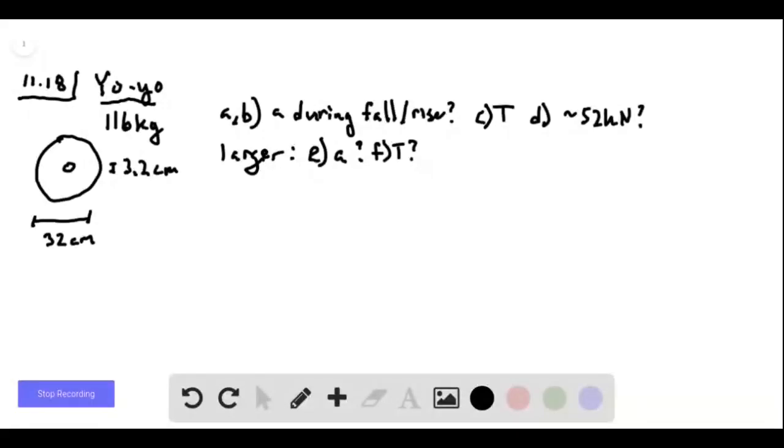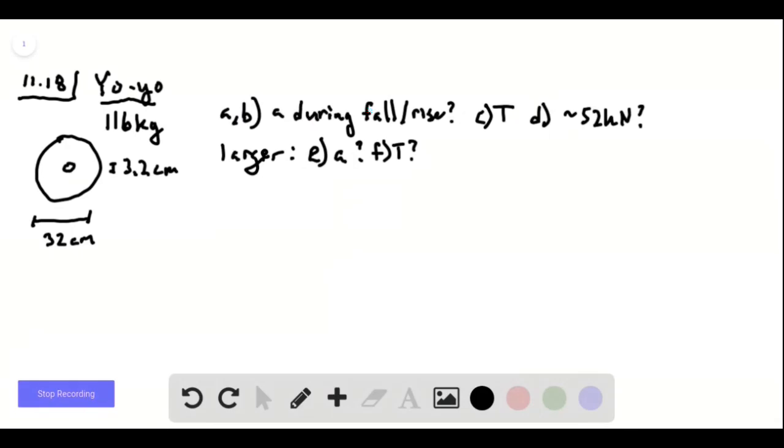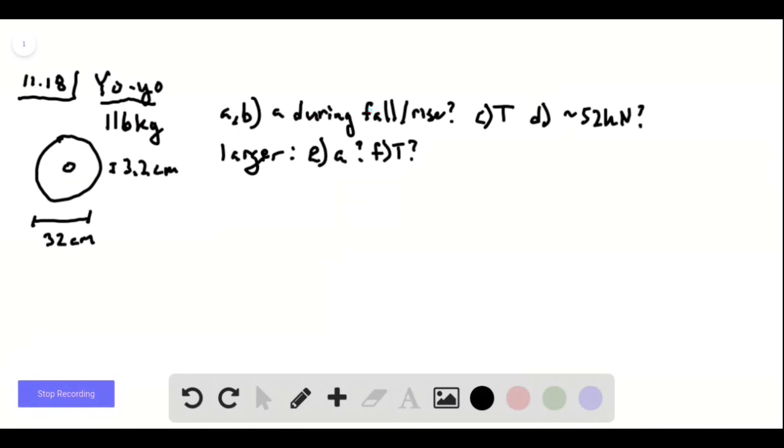Problem 11.18. We're told about a very large yo-yo that was released from a crane once in the 80s. The mass and dimensions are given here, and we want to know what is its acceleration while it's falling and rising? What is the tension in the chord? Does this approach the 52 kilonewton maximum tension that chord could withstand? And if we built the yo-yo larger but still to scale, how would the acceleration and tension differ?